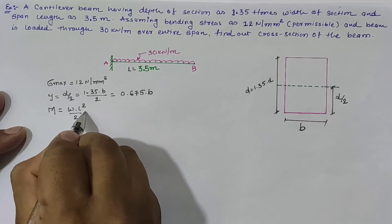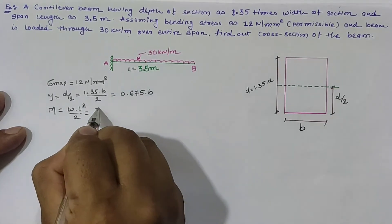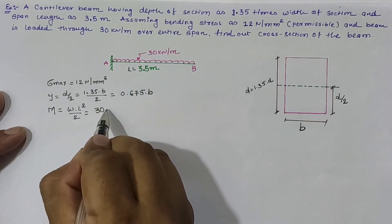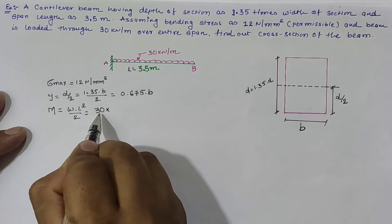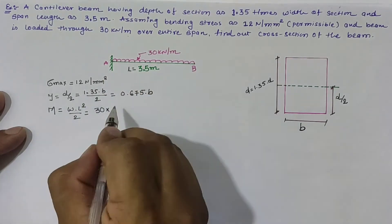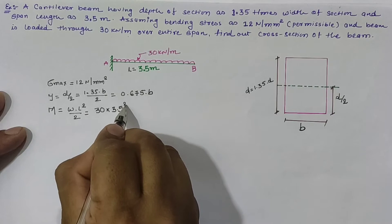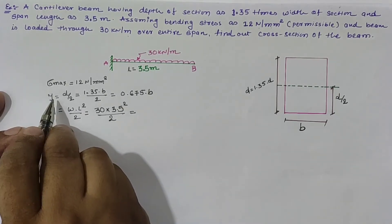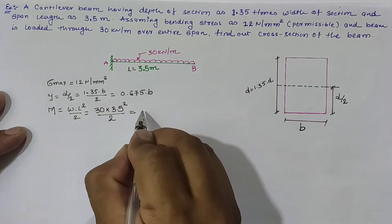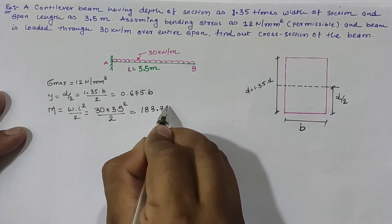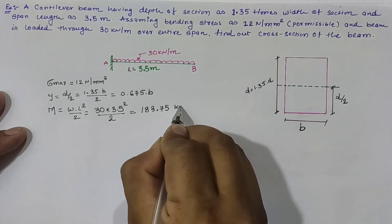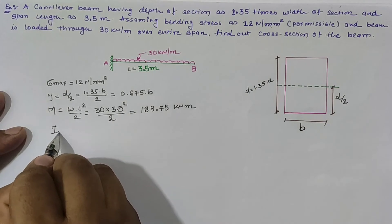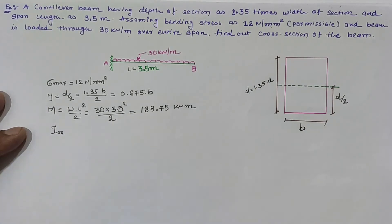The maximum bending moment for a cantilever beam loaded with UDL is M equal to wL squared divided by 2. With w equal to 30 kilonewton per meter and length L equal to 3.5 meters, we get 30 into 3.5 squared divided by 2, which equals 183.75 kilonewton meter. So our maximum moment is 183.75 kNm.